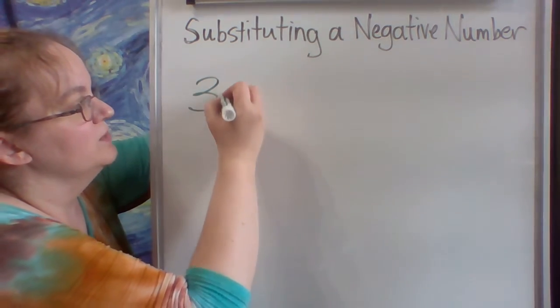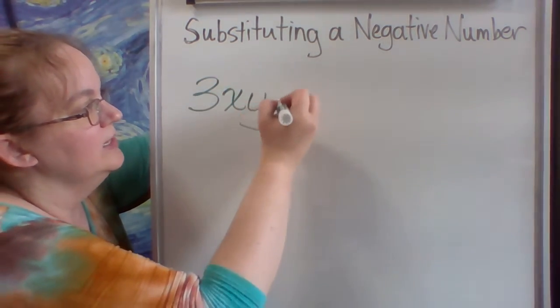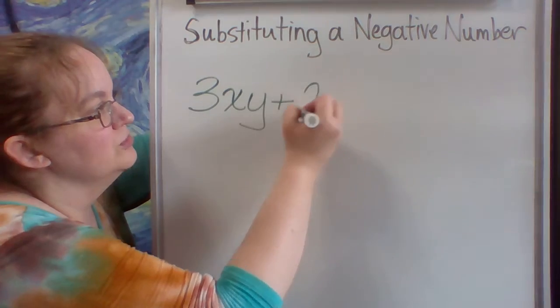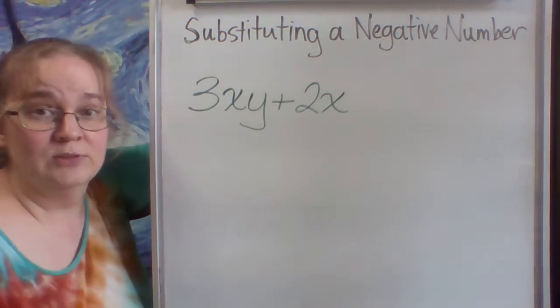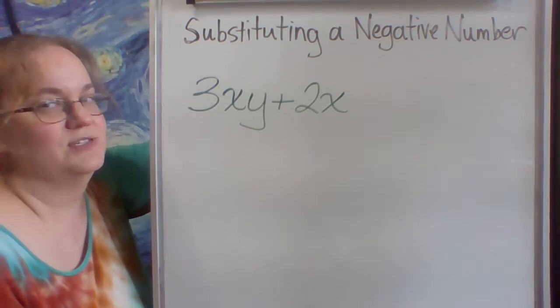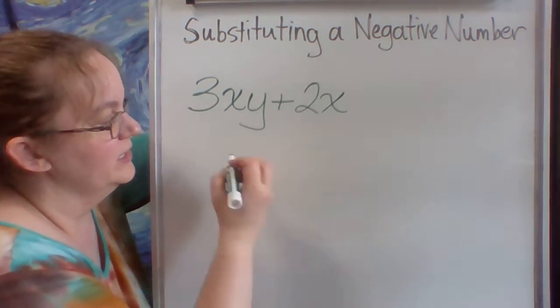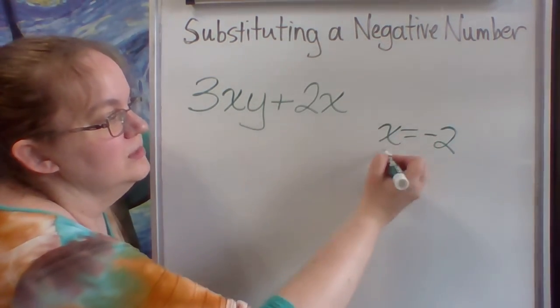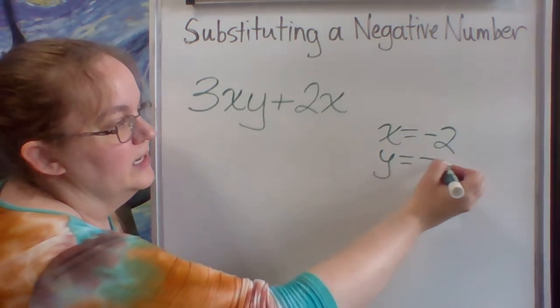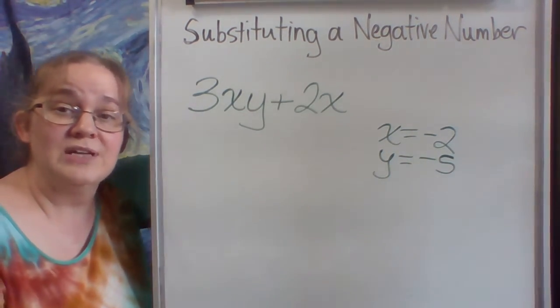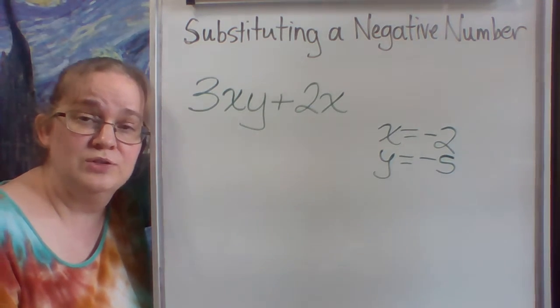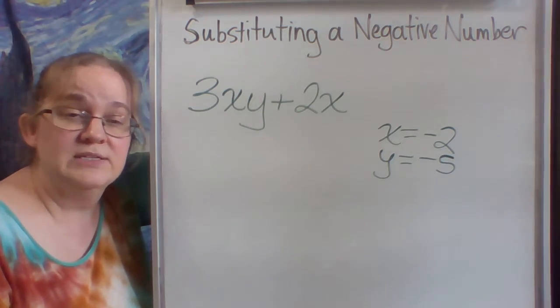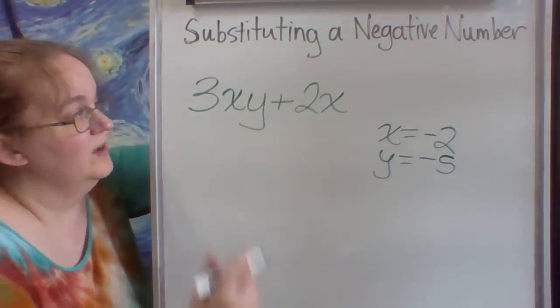Let's say I have 3xy plus 2x. Ooh, ah, it's not this scary, I promise. And I tell you that x is negative 2 and y is negative 5. So in other words, everywhere I see an x, I'm going to substitute in a negative 2. And everywhere I see a y, I'm going to substitute in a negative 5.